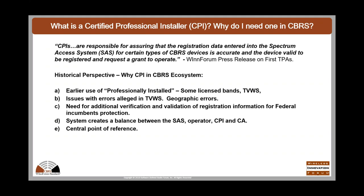There are serious incumbents in the CBRS system, and interference with those incumbents causes major problems. There's a need for additional verification and validation by those incumbents, including federal incumbents. The system created for CBRS creates a balance between the SAS operators or administrators, the operators, the CPI's job, and certificates of authority. They are a central point of reference.